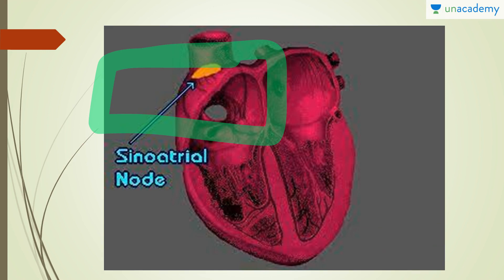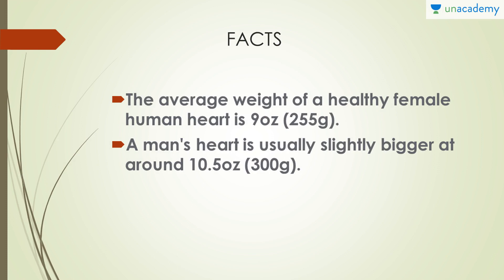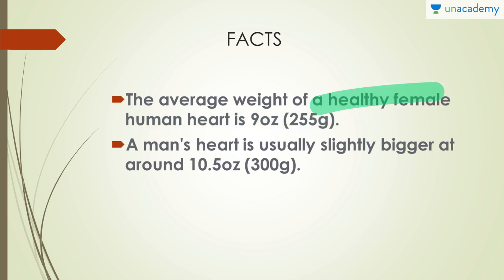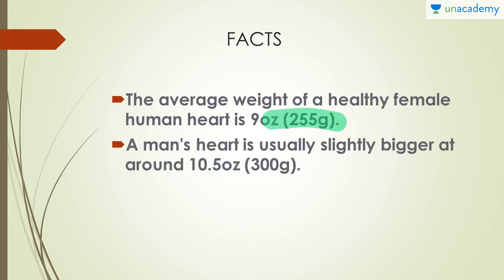The largest natural pacemaker of the heart is called the sinoatrial node, or SA node, and is found in the right atrium. This is a picture of the sinoatrial node. Regarding facts about the heart: the average weight of a healthy female human heart is 255 grams, while a man's heart is usually slightly bigger at around 300 grams — approximately 45 grams more than the female heart.